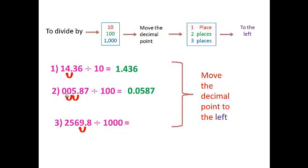Now, we have a number divided by 1000. So move the decimal point to the left 3 places — three moves back: 1, 2, 3. The point will set between 2 and 5. The answer is 2.5698.